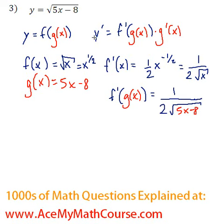And we're also interested in g prime of x. And that's just going to be the derivative of the red function. The derivative of 5x is just 5. The derivative of negative 8 is just 0.